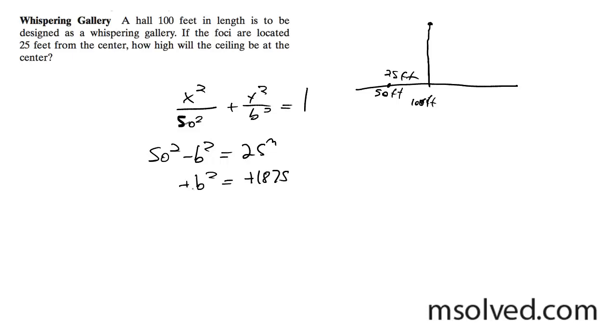the negative signs cancel out, and you end up with b is equal to the square root of that, which was 43.3 feet. So that's how high the ceiling is right here.